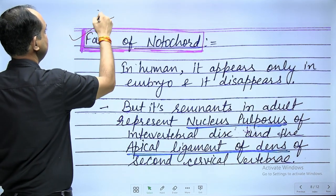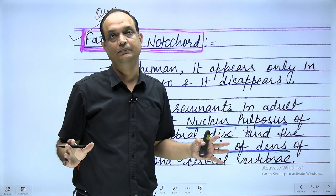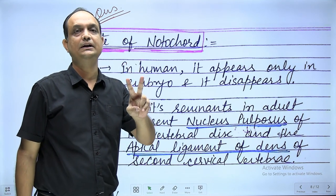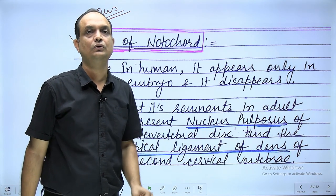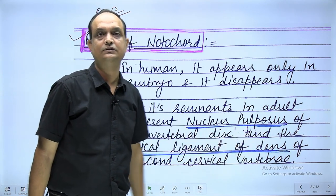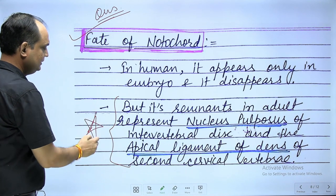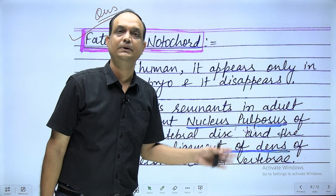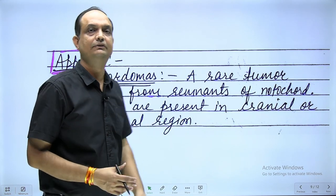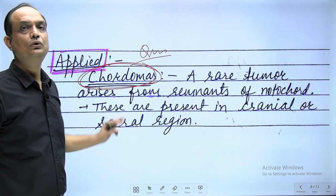Regarding the future of notochord in humans: it completely disappears except for two remnants, which are important MCQs. First, the nucleus pulposus of the intervertebral disc. Second, the apical ligament of the dens, attached to the dens of the second cervical vertebra. These are the two adult derivatives (remnants) of the notochord. Applied anatomy: if notochordal remnants persist abnormally, they give rise to a tumour called chordoma.